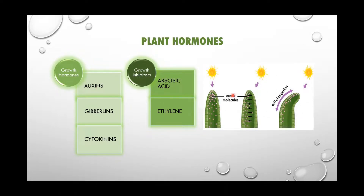Auxin molecules are diffused evenly at the tip of the stem. When sunlight falls evenly it is diffused evenly, but when sunlight comes from one direction, auxin molecules move away from that side and accumulate on the other side of the stem where sunlight is less. This stimulates that part of the stem to grow and elongate — therefore the plant appears to bend towards the light.